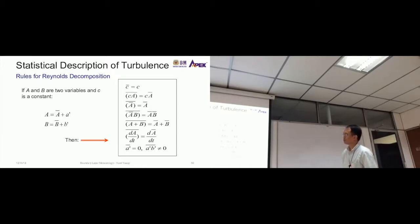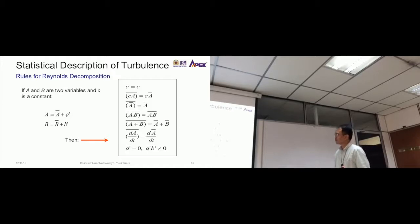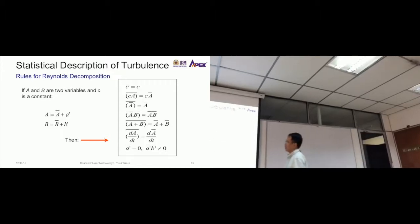If a and b are two variables and c is a constant, then we see this inside. Now this is using a and b instead of u or v. So the actual value of a is the average plus the instantaneous.